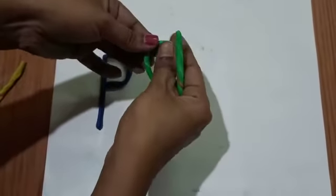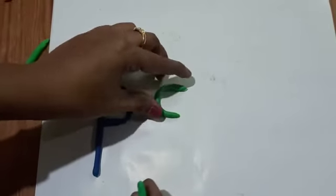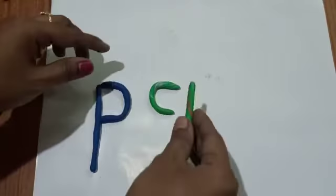Now we will do letter Q. I am taking green color clay. First, we will draw one curve, children. See, just like C, we will draw one curve.